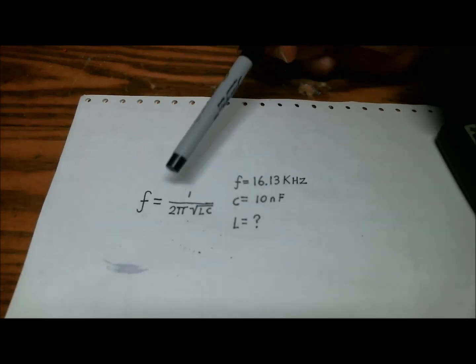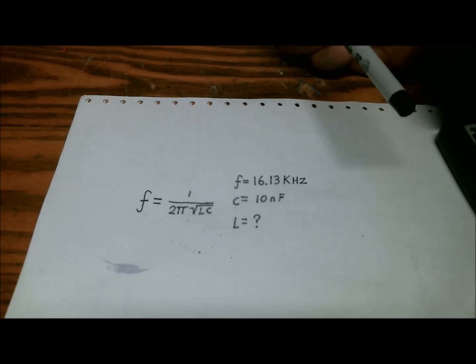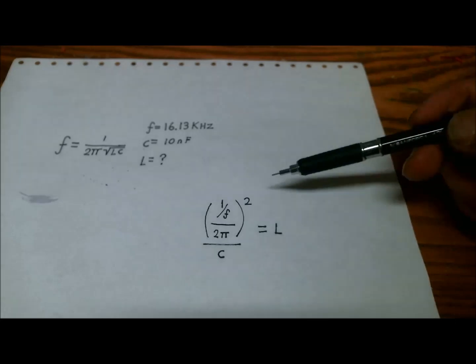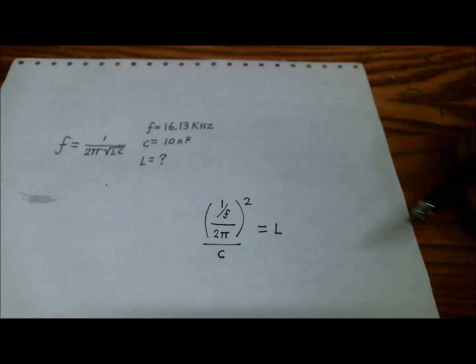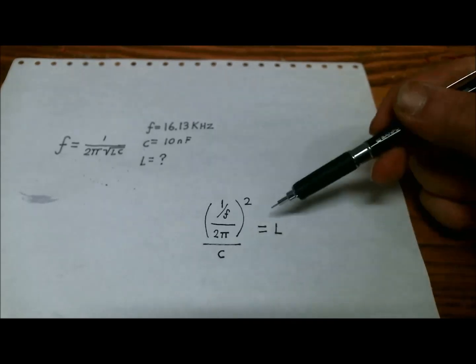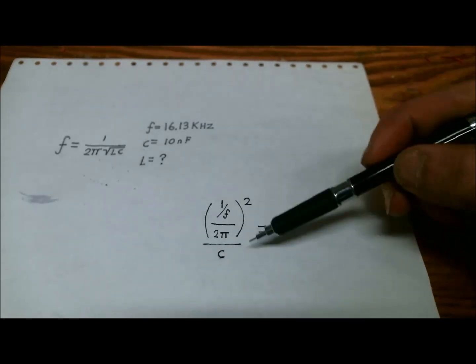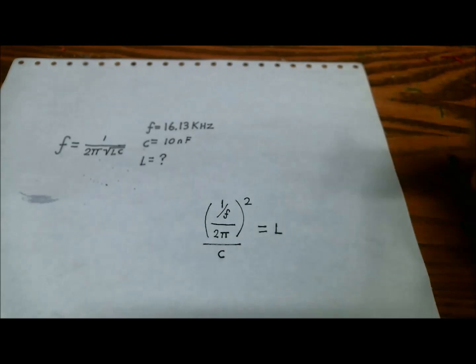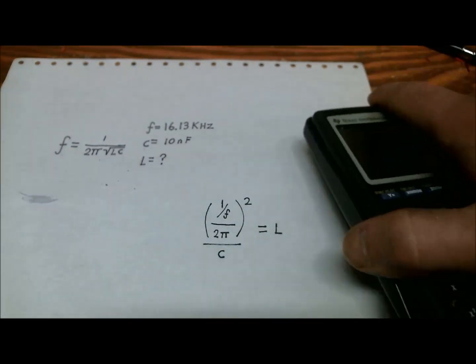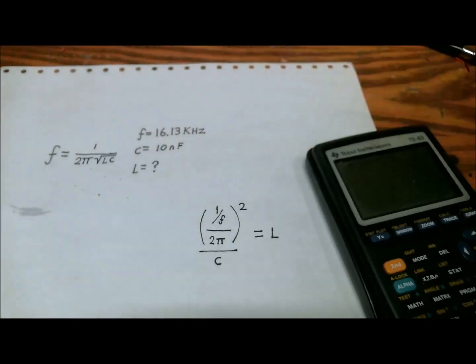So I'm going to rework this formula and we can determine what L is. And here's the formula to solve for L. And if you were to solve for C, all you need to do is switch these two variables and you would just divide this by L to find C, so it's quite simple to swap the two. Now I'm going to calculate this out and we'll see what the value of L is.